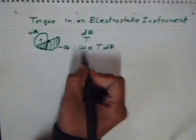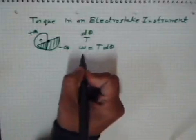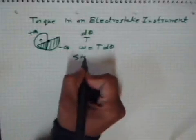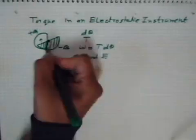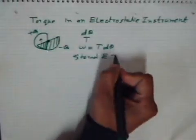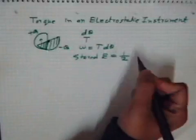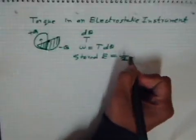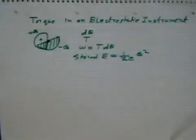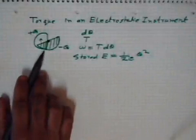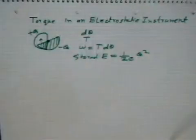Now we know that the energy stored in a capacitor is equal to half CV² or one by two, Q²/C.